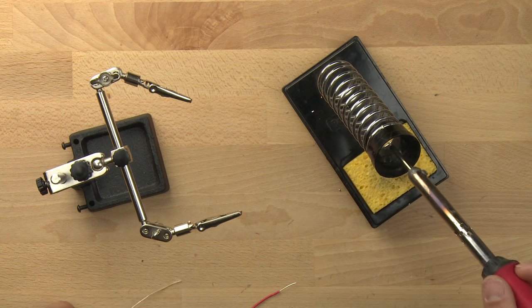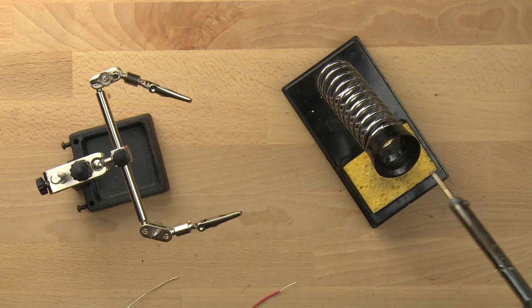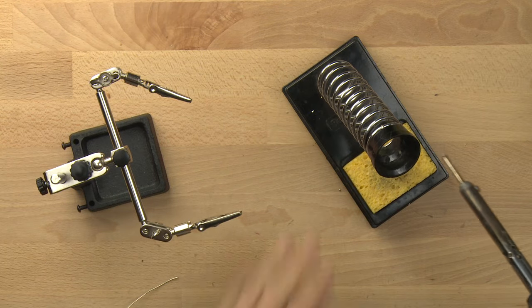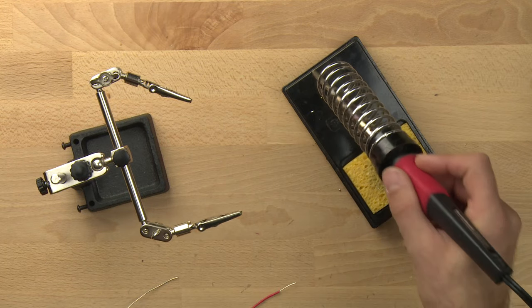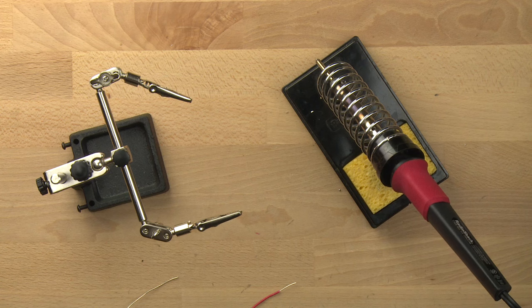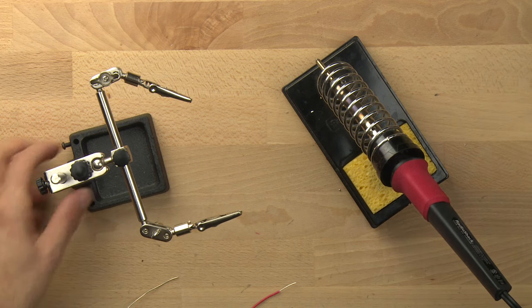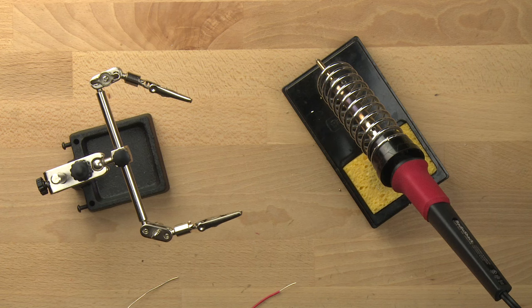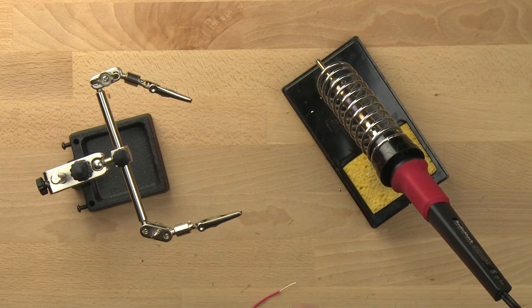So the first thing that you want to do is make sure that you have safety glasses. Make sure you have those safety glasses on. Make sure you have a holder for your soldering iron. That's going to keep the soldering iron stable. I like to also have a fan running. So I've got a little fan here. And that helps to blow away the fumes from the smoke.